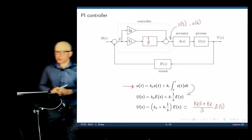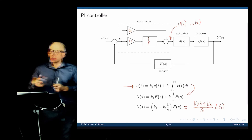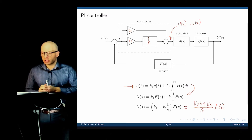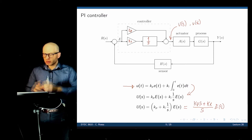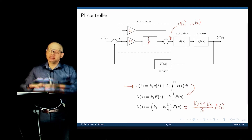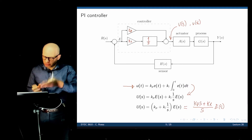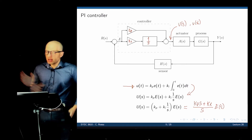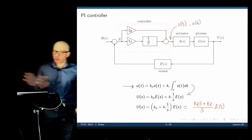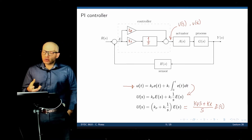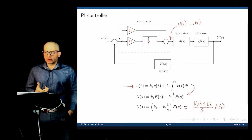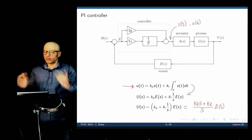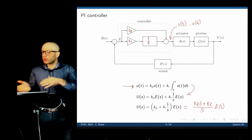Notice that we have one zero and one pole being added to the controller. This will affect the poles of the entire closed loop system, including the actuator and process. Before, we were just shifting around poles that were already there. Now we are adding one more pole and one more zero, which changes how the poles move and whether they can become unstable.